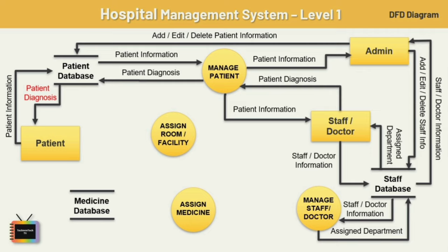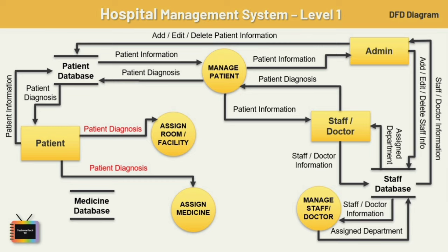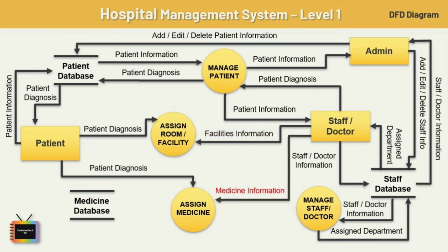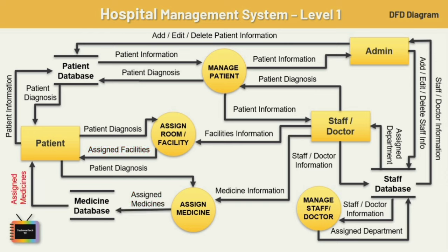The patient will send information to the assign room or facility process as well as to the assign medicine process. Staff or doctor will indicate what kind of facilities the patient needs, sending this info to the assign room or facility process. After diagnosis, the doctor will also send medicine info to the assign medicine process. Both modules process this data and send the facilities and medicine info to the patient. Finally, the patient management process will send the bill info to the patient. In summary, input containing the patient's information is passed to the manage patient process, changes are made based on diagnosis and medication, data is stored in the patient database, and the database produces the bill information output.